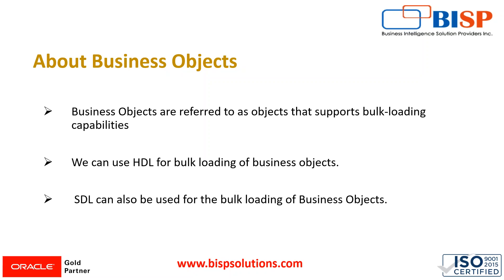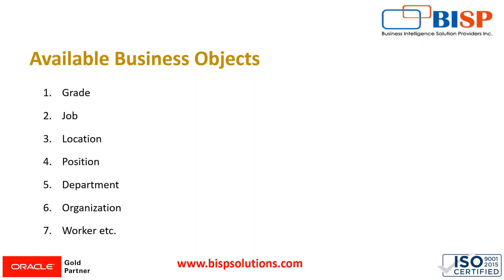We have different utilities available in order to load data in HCM Cloud. A business object supports both utilities — either we can go with HDL, that is Human Capital Management Data Loader, or we can load our business object with SDL, that is Spreadsheet Data Loader. Right now we are focusing on HDL capability. The available objects in HCM Cloud include grade, job, location, position, department, organization, worker, and so on.